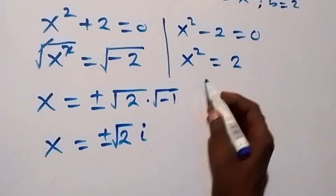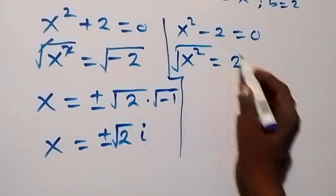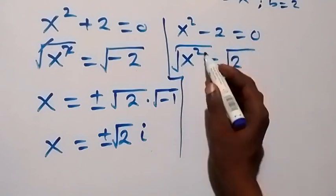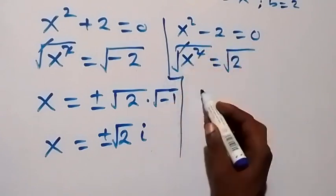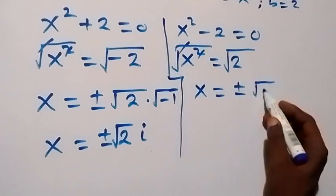And similarly on this side, we can take the square root on both sides. Then the square also cancel square root here. Then we have x equals to plus or minus root 2 from here.